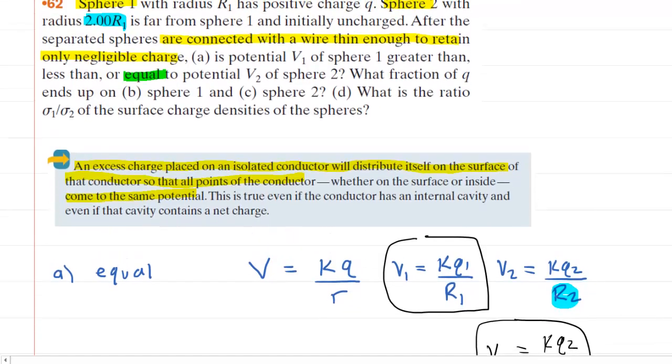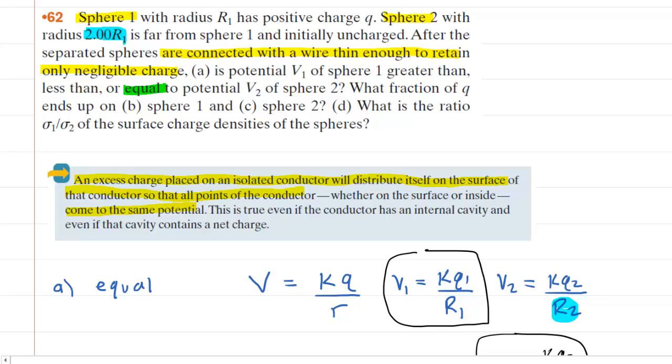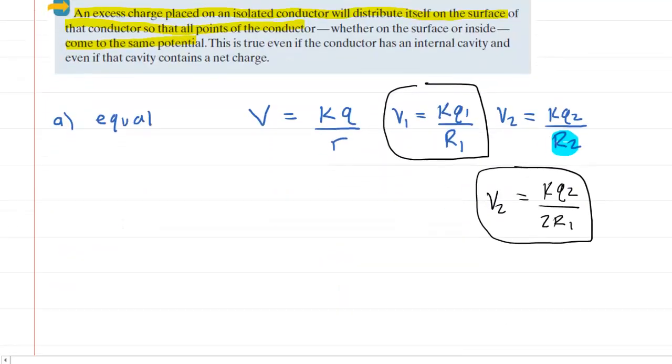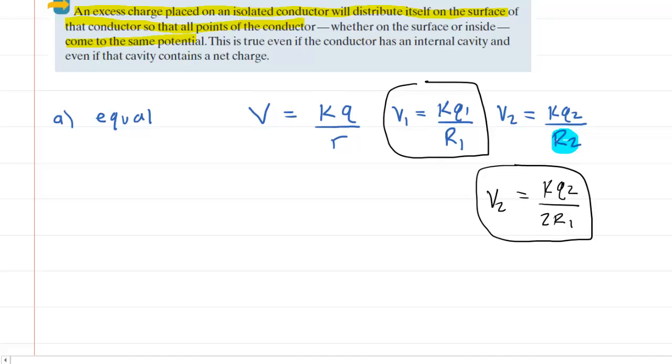We note that initially, the amount of charge on sphere one was represented by just Q, and then once these spheres were connected, that charge distributed itself amongst the two spheres. So what this means is that the total charge is still equal to that symbol Q. In other words, the charge on sphere one after they're connected plus the charge on sphere two after they're connected will still equal the total charge that was initially present on sphere one. Now, we stated earlier that these two potentials are going to be equal to one another. That was our conclusion in part A. And since they are equal to one another, we can set this expression for V1 equal to this expression for V2.